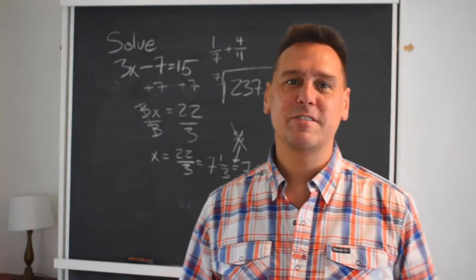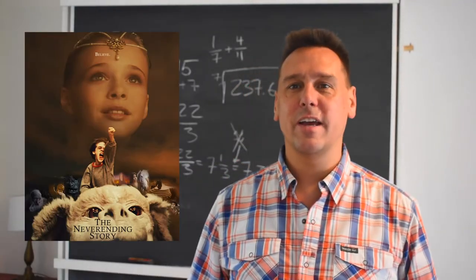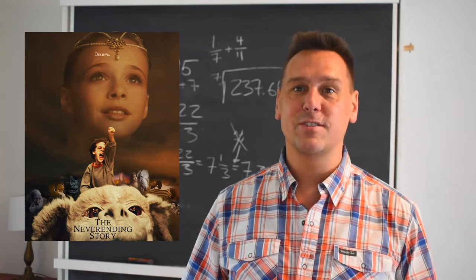3x minus 7 equals 15 has turned into a bit of a longer anatomical lesson than I imagined when I started this.